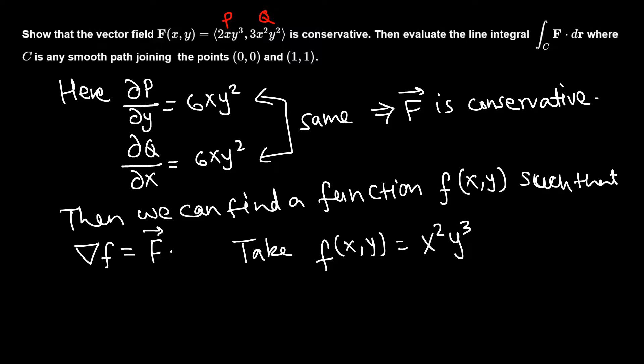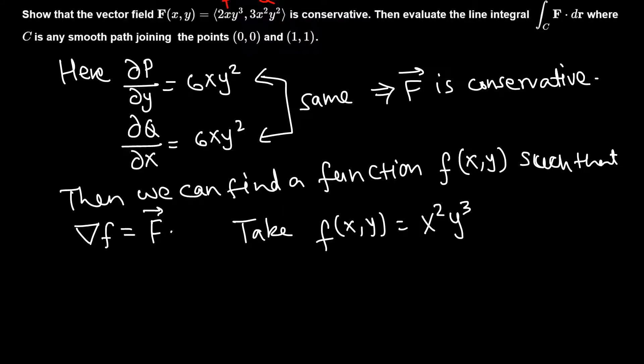Now we need to find the partial of this with respect to y. Partial of this with respect to y is x² times 3y², which is 3x²y². Oh, that's here, so this is it. This is a potential function. In fact, there is a procedure to determine this, watch my other videos.